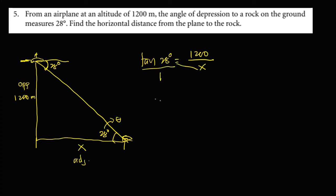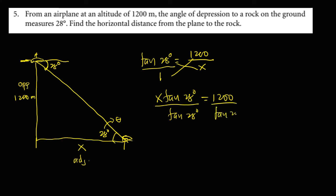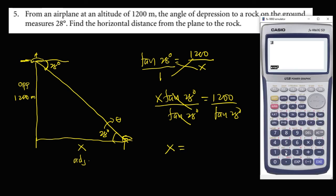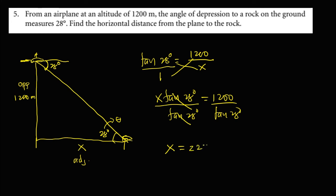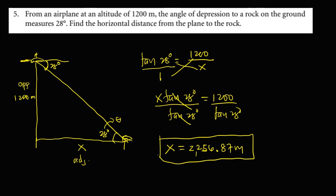Do cross multiplication: x times tangent 28 degrees equals 1,200. Divide both sides by tangent 28 degrees, so x equals 1,200 divided by tangent 28 degrees, that's 2,256.87 meters. This is the horizontal distance from the plane to the rock. Thank you.